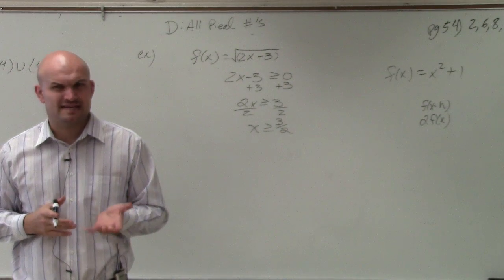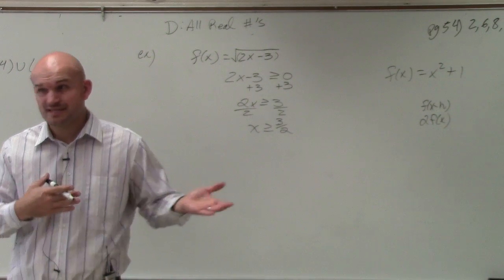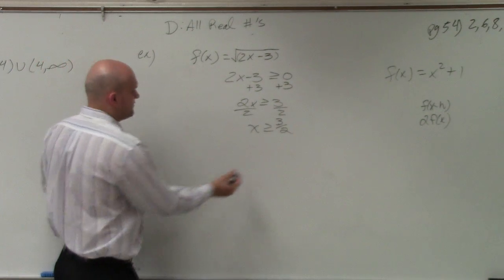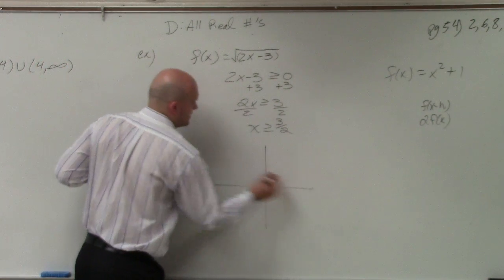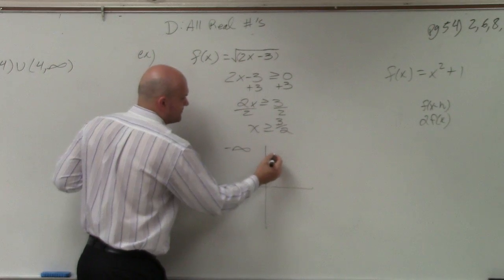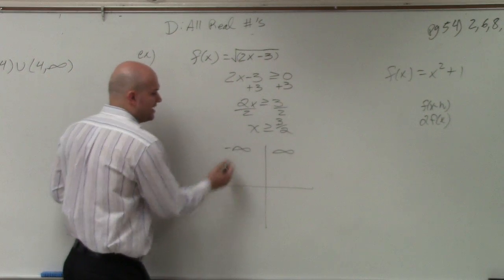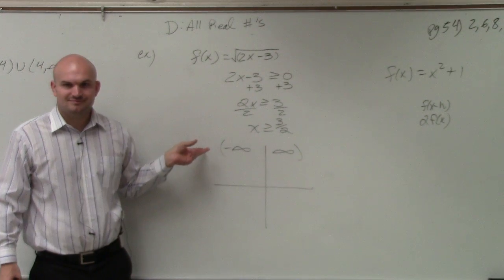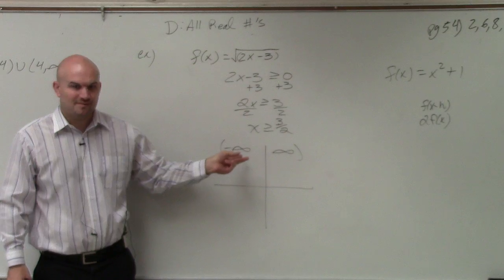So what values can x not be equal to? Anything less than 3 halves, right? Correct? So if you look, if you kind of think about this, if you have negative infinity to infinity, that's your implied domain. But we can't have any negative numbers, right? Can't have any negative numbers.